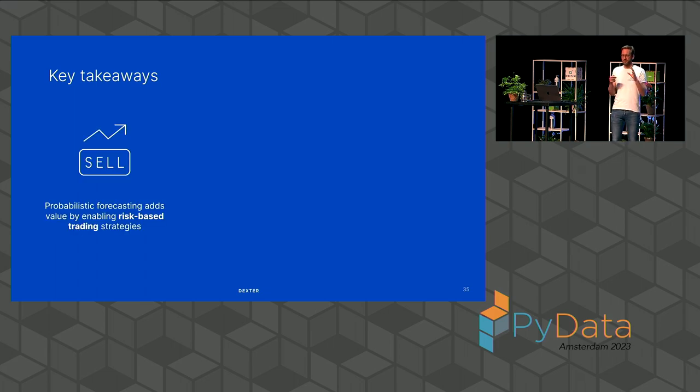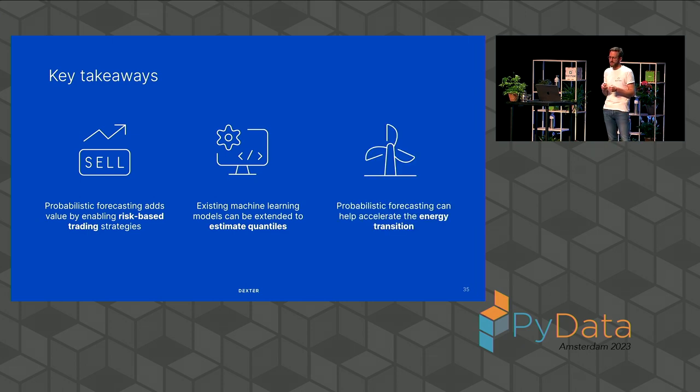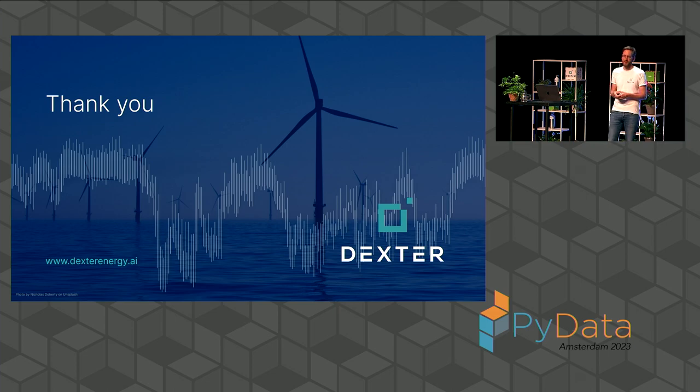This brings me to the key takeaways from this talk. First, I hope I've shown you how probabilistic forecasting can add value by enabling risk-based energy trading. So, based on your risk appetite, your loss versus gains, you can make different decisions and help stabilize the grid. How existing machine learning models can be extended to estimate quantiles, showing three, four, three approaches plus a baseline approach. And finally, lastly, I hope to have shown that probabilistic forecasting can help accelerate the energy transition to renewable energy sources. And with that, I'd like to end. Thanks for your attention, and I'm happy to take a couple of questions.